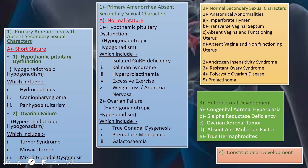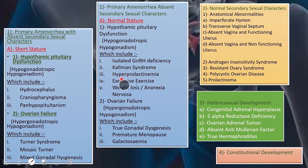In the normal stature group with absent secondary sexual characteristics, hypothalamic pituitary dysfunction includes isolated GnRH deficiency, Kallmann syndrome, hyperprolactinemia, excessive exercise, weight loss, and anorexia nervosa. Ovarian failure includes true gonadal dysgenesis, premature menopause, and galactosemia.